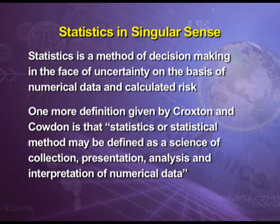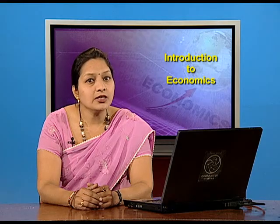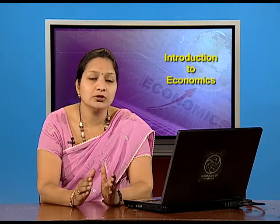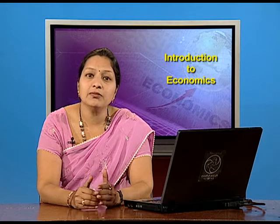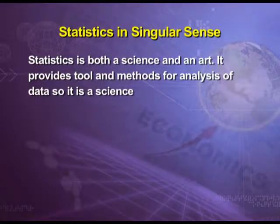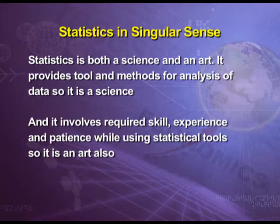One more definition given by Croxton and Cowden is that statistical method may be defined as a science of collection, presentation, analysis and interpretation of numerical data. This definition is quite satisfactory. After discussing various definitions of statistics both in plural and singular sense, we may conclude that statistics is both a science and an art. It provides tools and methods for analysis of data, so it is a science.